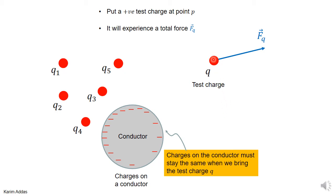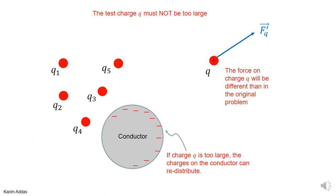When you place charge Q, you must make sure it doesn't affect the existing charge distribution in any way. For instance, if Q is very large, the orientation of charges on the conductor's surface can change, meaning the charges whose effect you're trying to find at point P are no longer the same as in the original problem. Therefore you must bring Q as a very small charge — it cannot affect anything happening in the original problem.